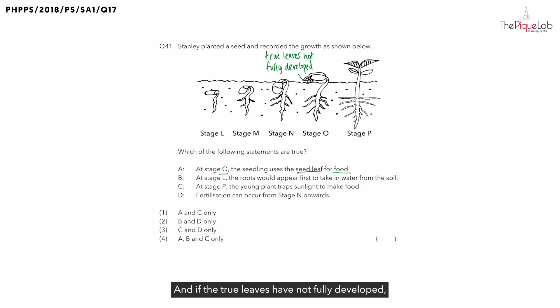And if the true leaves have not fully developed, are they able to carry out photosynthesis to make food? No, this seedling is not able to carry out photosynthesis to make its own food. So where does the seedling get its source of food? The seedling will get its source of food from the seed leaf, the structure I'm pointing with the purple arrow. Let's write that down. So is statement A correct? Does the seedling use the seed leaf as a source of food? Yes, it does. So statement A is correct.